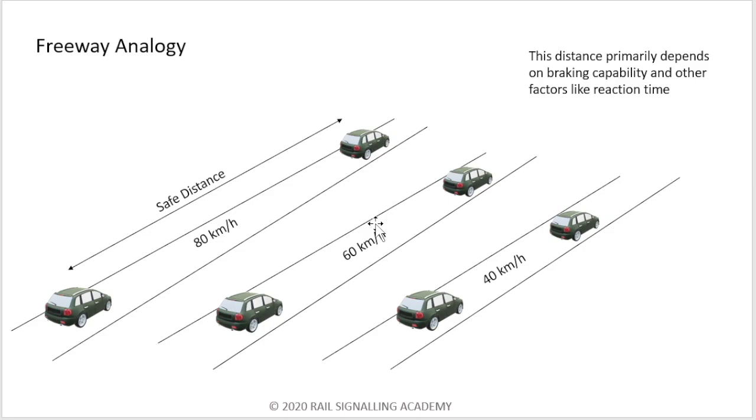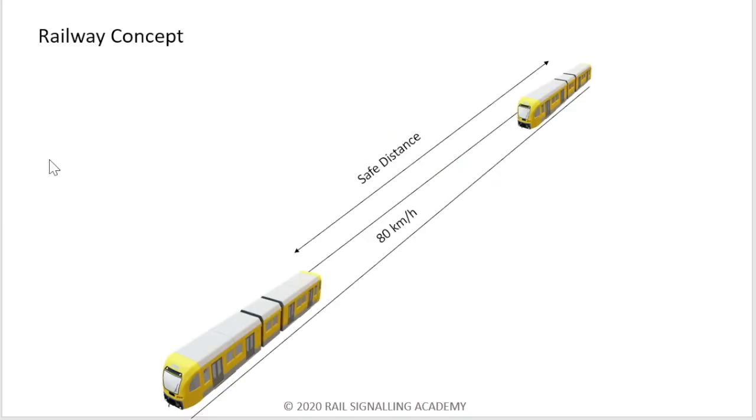With that thought, we'll start discussing about headway in railways. The same thing happens in railways also. There's a train in front and then there's a train in back. You try to maintain a safe distance between the two. Obviously, this safe distance is much more than the safe distance on the freeway because the wheel-rail adhesion is very low. And because of that wheel-rail adhesion, you have really long braking distances. That's one reason why your safe distances are really long on the railway concept. And this safe distance is what primarily determines the headway.